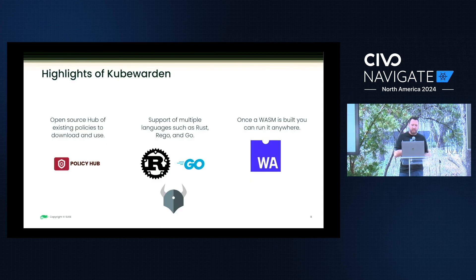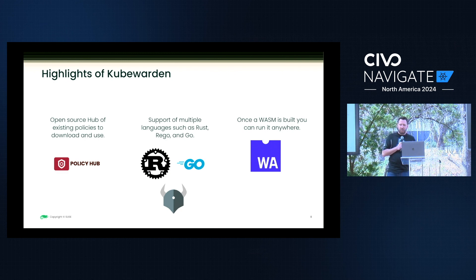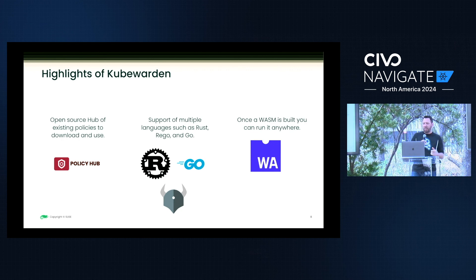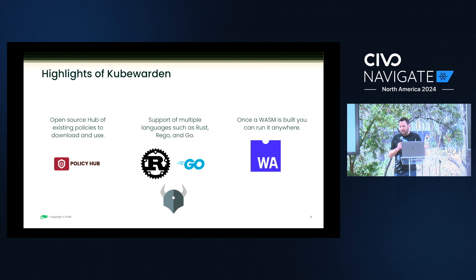The highlights of Kubewarden: we have Policy Hub, which is an artifact factory. It is an open-source collection of existing policies you can download and use. We recommend checking there first — if the policy is there, use it; if not, then write your own. We support multiple languages such as Rust, Rego, and Go, and everything is built as a WASM module, which is a really cool production use of WebAssembly.